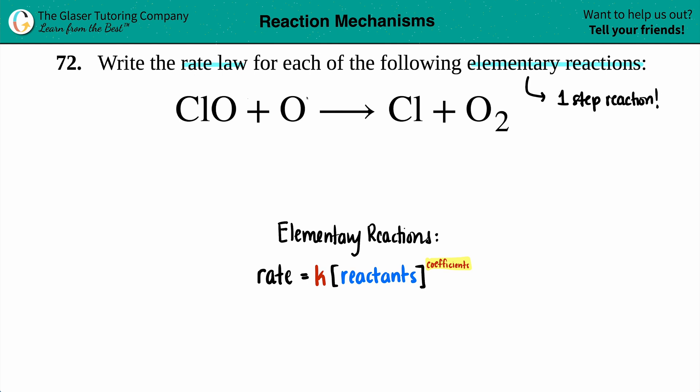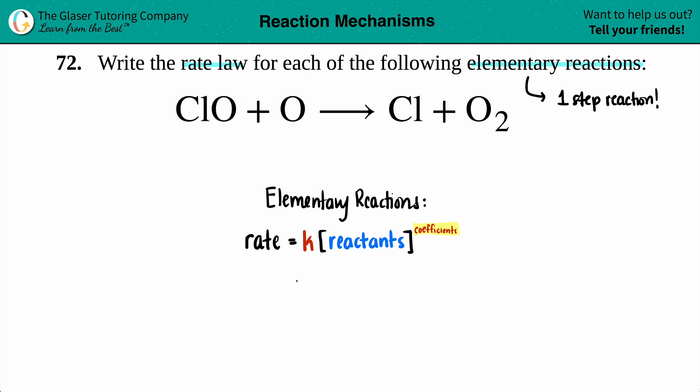We just have to write the rate law for this. Let's go for it. Rate equals, I guess we'll color code, so k times the rate constant times the concentration of the reactants. In here we have two reactants. We have ClO, so let's write that one out. Close that bracket and then we have another one as well, we have O, so I'll write that down.